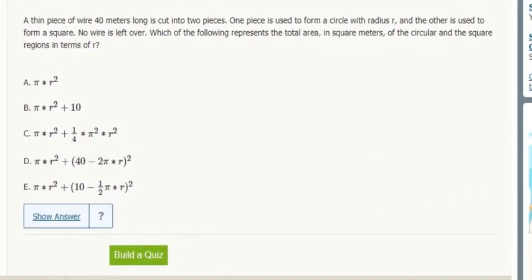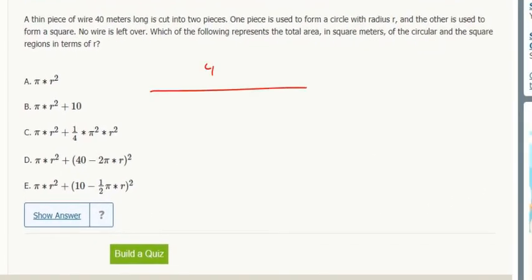So we take a piece of wire that's 40 meters, we take some of it out, and that goes and makes a circle. This area is going to be πr², whatever bit of the 40 that is.